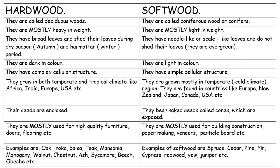Why do I say mostly? It's because there are some hardwood, like balsa wood, that are light — in fact, balsa wood is one of the lightest woods there is. And there's also the pitch pine, which is a softwood, but it is one of the heaviest woods there is. Apart from that, hardwood shed their leaves during the dry season, while softwood do not shed their leaves during the dry season.